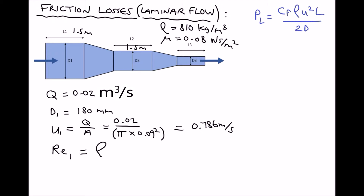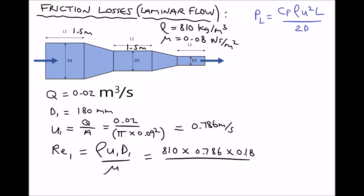Our formula for the Reynolds number is rho u1 d1 over mu. We need to use the corresponding diameter and velocity for the fluid in the first section of the pipe. The density is given as 810, the fluid velocity we've just calculated as 0.786, the diameter of the pipe is 0.18 meters, and the dynamic viscosity is 0.08. This gives us a Reynolds number equal to 1432 — that's dimensionless, so it doesn't require any units.